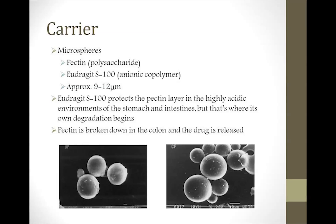Microspheres prevent premature breakdown of the drug. They are about 9 to 12 micrometers in diameter and have two layers of coating. The outer layer is Eudragit S100, an anionic copolymer that begins to break down and become permeable at a desired pH, such as those of the stomach and intestines. The inner layer is pectin, a polysaccharide that can be broken down only by enzymes found in the colon. Its degradation leads to a controlled and extended release of metronidazole targeted specifically in the colon, which kills the parasite, clears the disease in the host, and prevents further spread of Giardiasis.